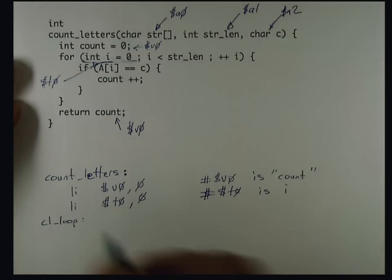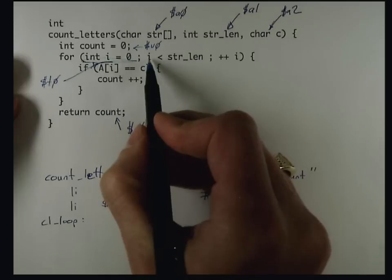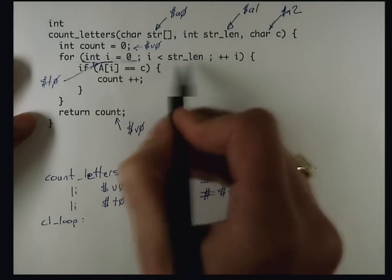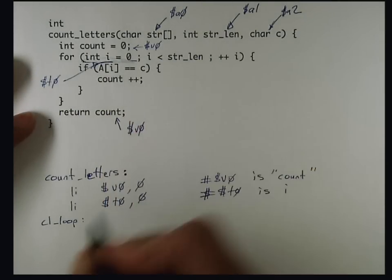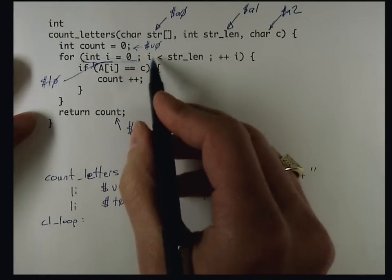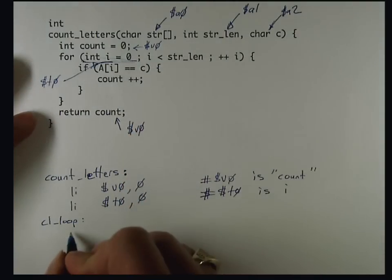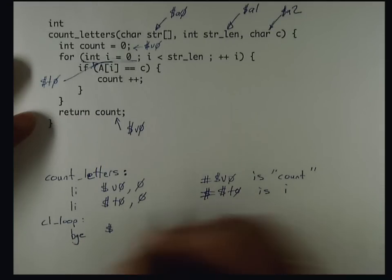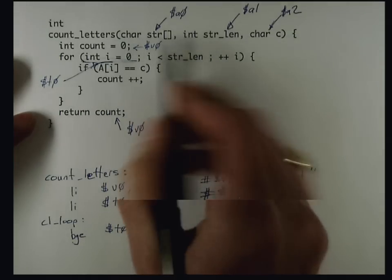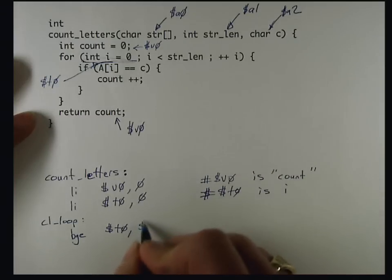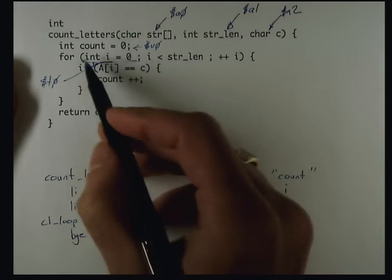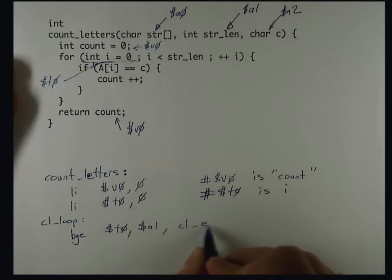I'm going to test whether I is less than string length. I'm actually going to invert that condition to see whether I is greater than or equal to string length. So I'm going to use a branch if greater than or equal of I, which is in register T0, comparing it to string length, which is in A1. And if it is greater than, that's the exit condition of the loop, so I'll go to CL_exit.